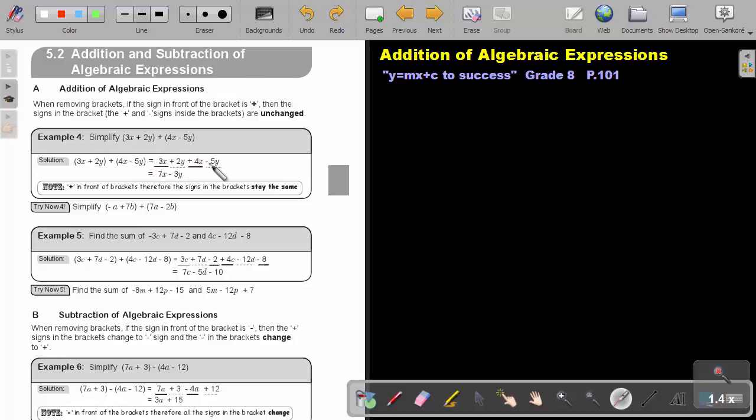And if the signs are different, what do I do if the signs are different? I subtract and I take the sign in front of the biggest movement. So it's negative 3Y.